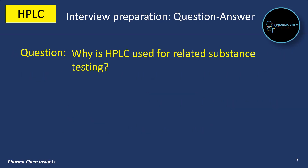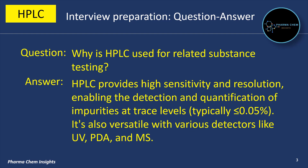Next question: why is HPLC used for related substance testing? HPLC provides high sensitivity and resolution, enabling the detection and quantification of impurities at trace levels, typically less than 0.05%. It is also versatile with various detectors like UV, PDA, and MS (mass spectrometry).